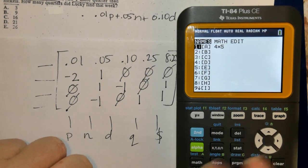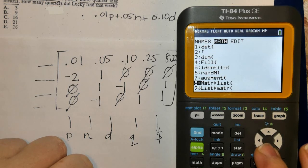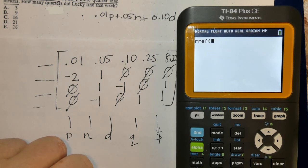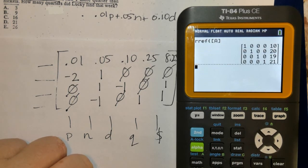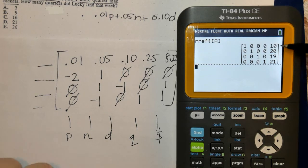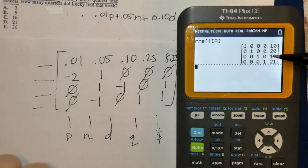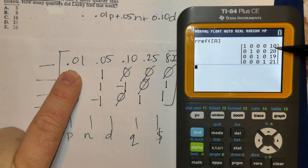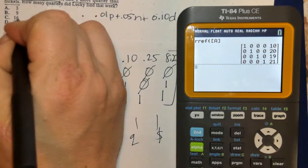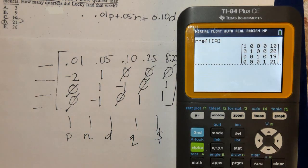2nd quit, 2nd matrix. Go to RREF, 2nd matrix. What does this represent? This is the number of, in order, pennies, nickels, dimes, and quarters.